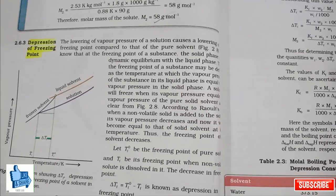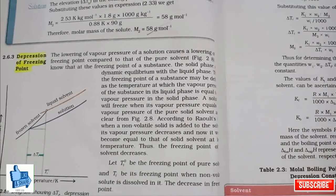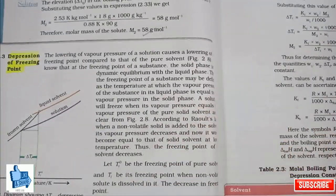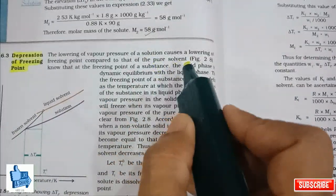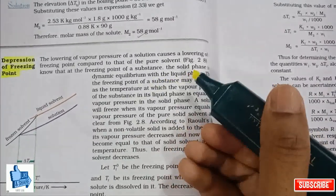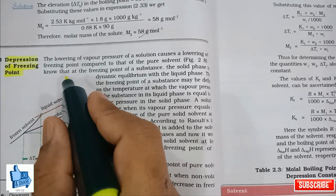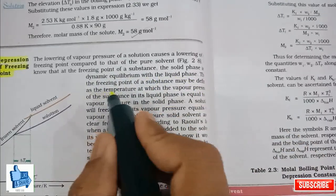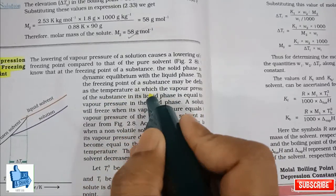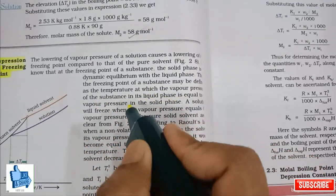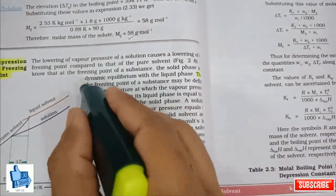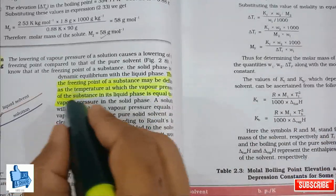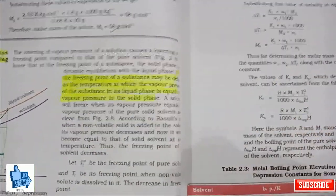In your NCERT it is also mentioned that the lowering of vapor pressure of a solution causes a lowering of the freezing point compared to the pure solvent. The freezing point of a substance is defined as the temperature at which the solid phase is in dynamic equilibrium with the liquid phase, or equivalently, the temperature at which the vapor pressure of the substance in its liquid phase equals the vapor pressure in the solid phase. Freezing occurs only when these two vapor pressures become equal.